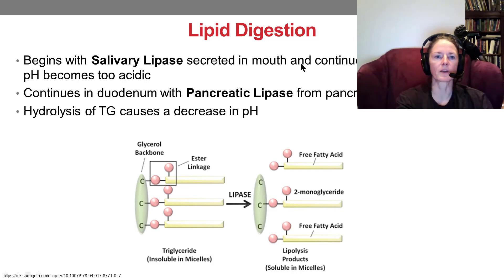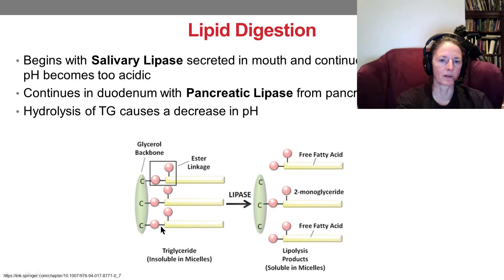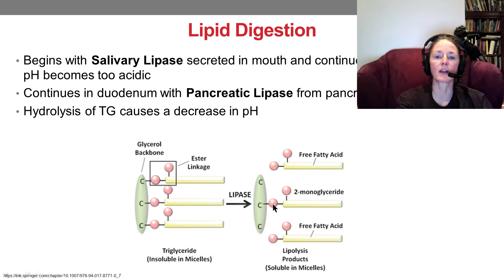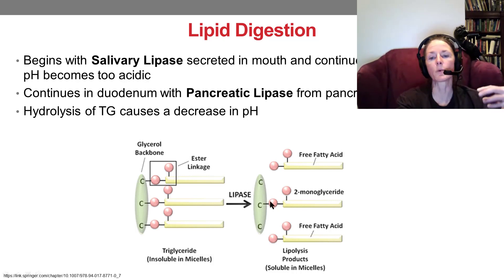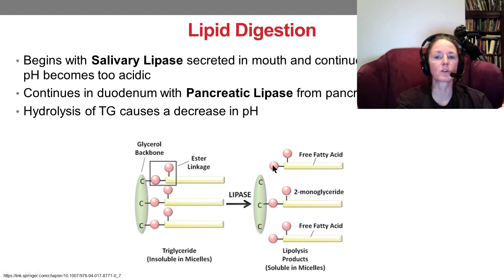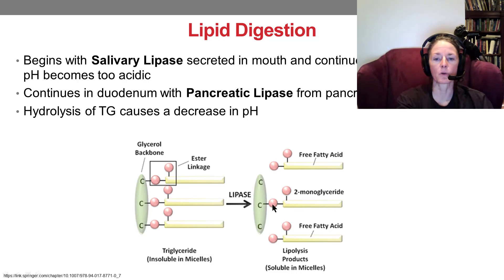Lingual lipase starts the process of lipid digestion, breaking the ester bonds between the carboxyl groups of fatty acids and the hydroxyl groups of glycerol. This is hydrolysis — adding water back to reconstitute the carboxyl group on the fatty acid and the hydroxyl group on the glycerol molecule.